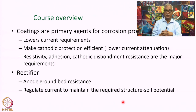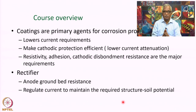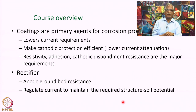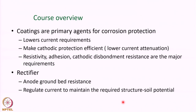For coatings, the important properties to look at are resistivity, adhesion, and cathodic disbondment. The rectifier is the source of current for the ICCP system; its selection depends upon the anode ground bed resistance and the current required to protect the structures. The rectifier regulates current so that the required pipe-to-soil or structure-to-soil potential is maintained.